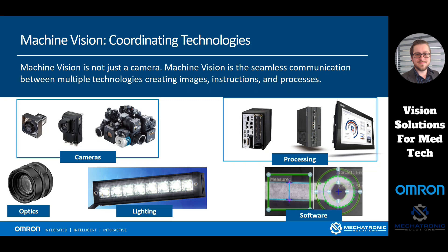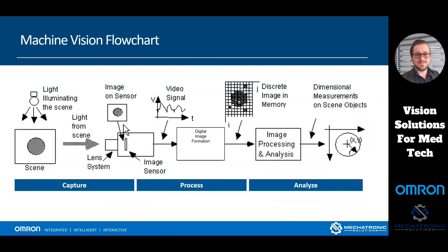Lastly, you have to have software. All of what we've put together is not very useful unless we have software to actually process the image data we're producing. Softwares can range from Omron's AutoVision platform to the FC Panda series with our FH — they can all do different things, and we might have one software that's really good at doing a specific task.